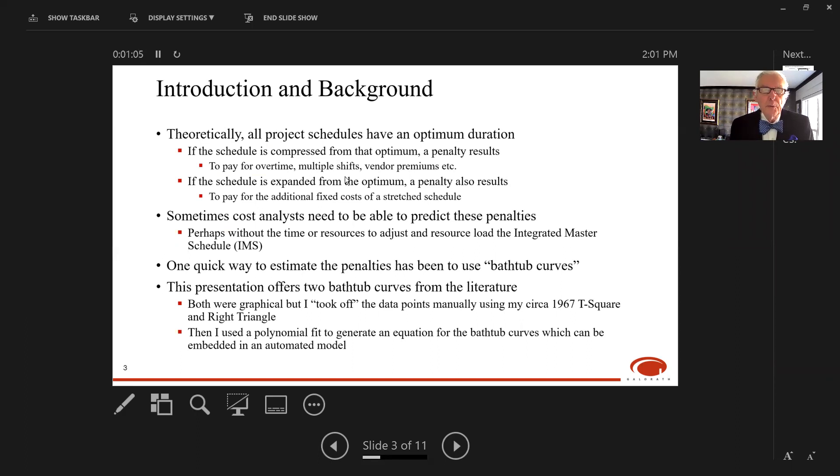Sometimes as cost analysts, we need to be able to predict these penalties, and maybe we don't have time or resources to adjust the resource-loaded integrated master schedule. We need a quicker way. One quick way that's been used in the past is bathtub curves. This presentation will offer two bathtub curves from the literature. I used a polynomial fit to generate equations that could be embedded in an automated cost model.